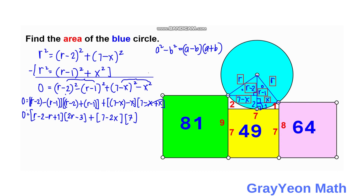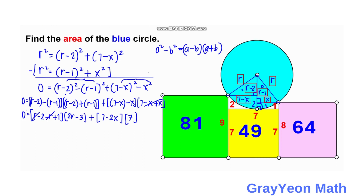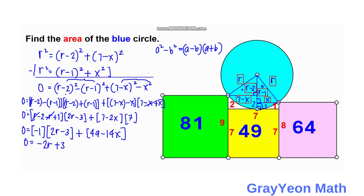Simplifying further, the r terms cancel, and negative 2 plus 1 gives negative 1, times (2r minus 3). This becomes negative 2r plus 3 plus 49 minus 14x equals 0.